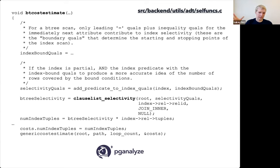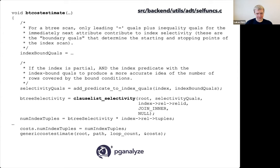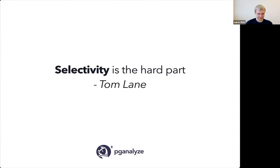Partial index predicates are applied to adjust which portion of the index is examined. Ultimately what's calculated is the btree selectivity — a number between zero and one — and the number of index tuples to look at is the total number of index entries multiplied by that selectivity. Selectivity is the hard part. When you see Postgres making certain cost estimations, selectivity is often the root cause of a bad or a good plan. This is determined for each index based on the expressions you're trying to use with it.